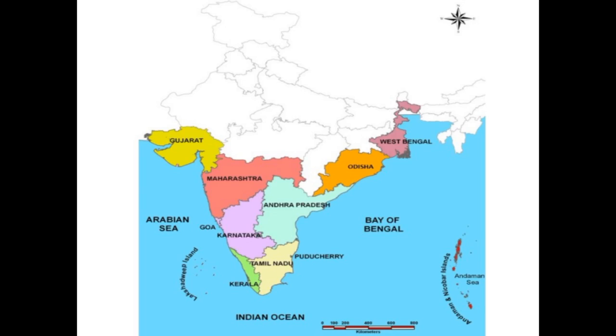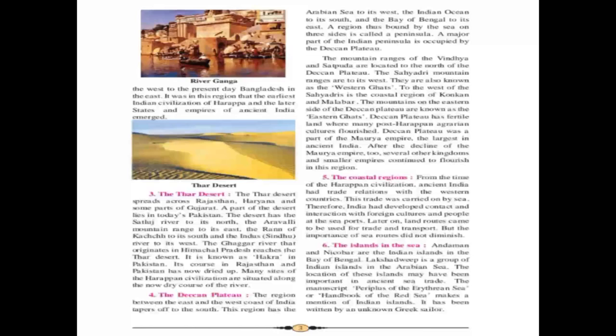Gujarat, Maharashtra, Goa, Karnataka, Kerala, Tamil Nadu, Andhra Pradesh, Odisha, and West Bengal are the nine coastal states of India.